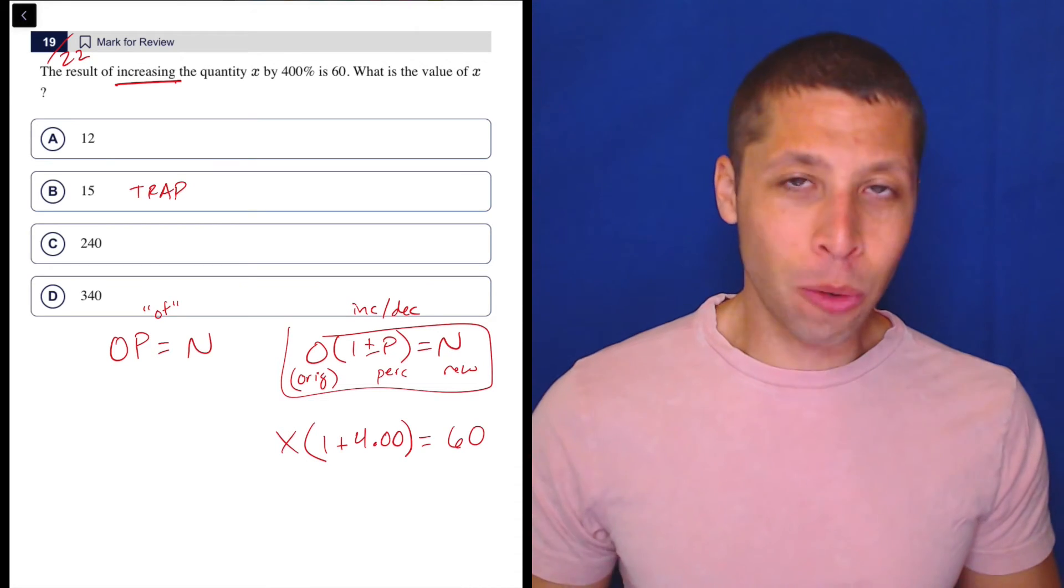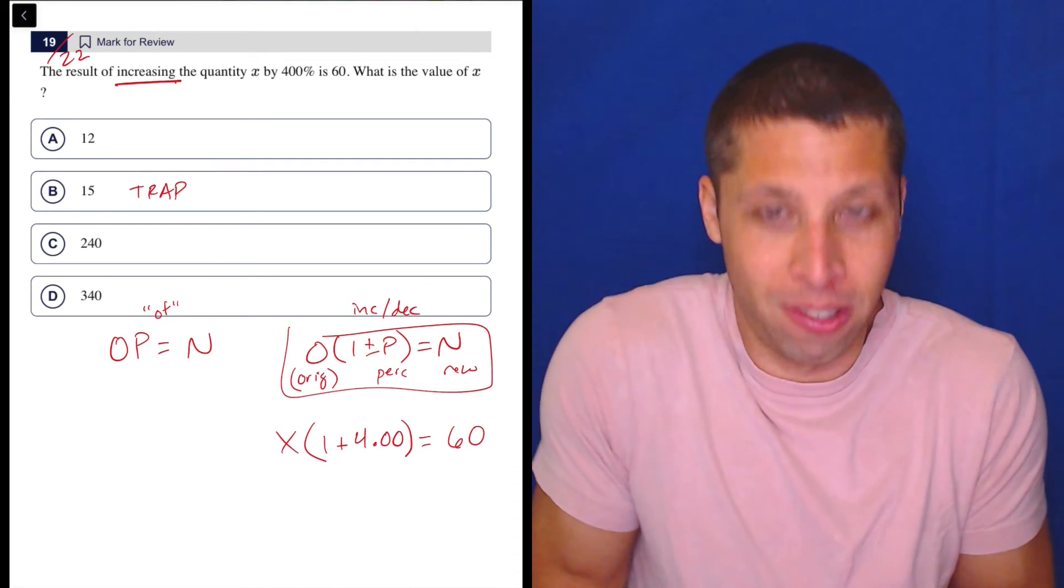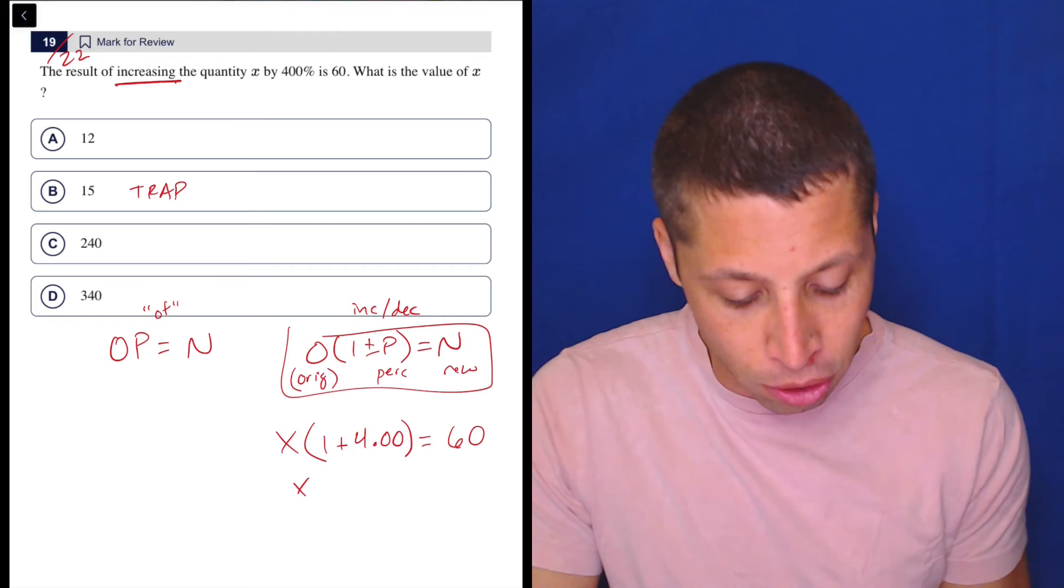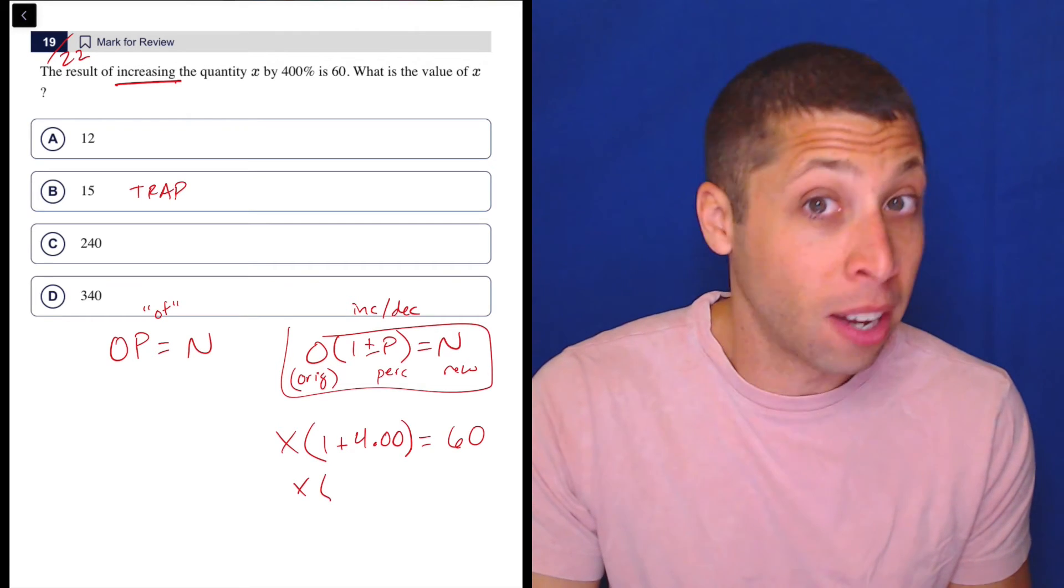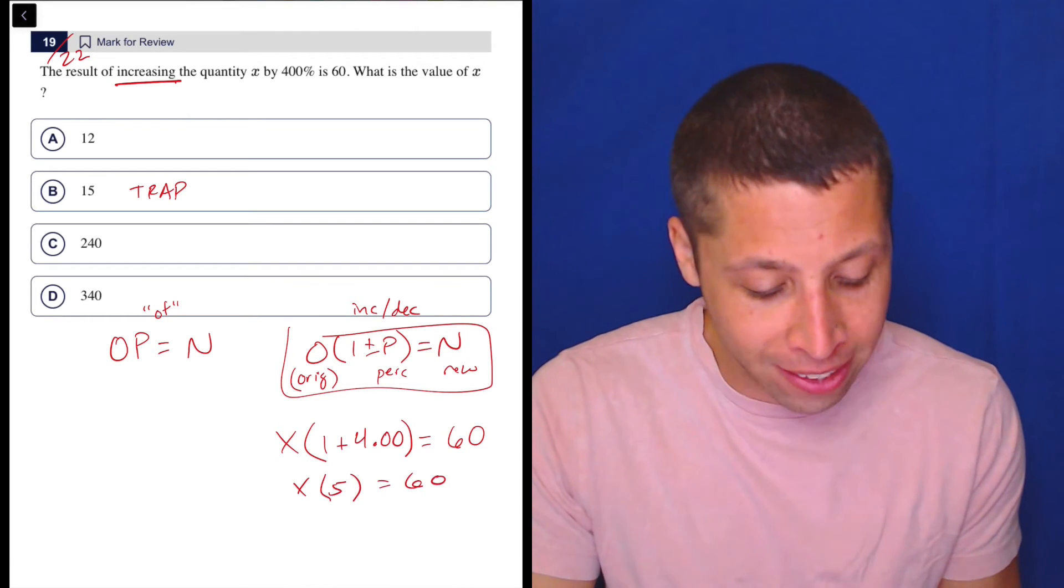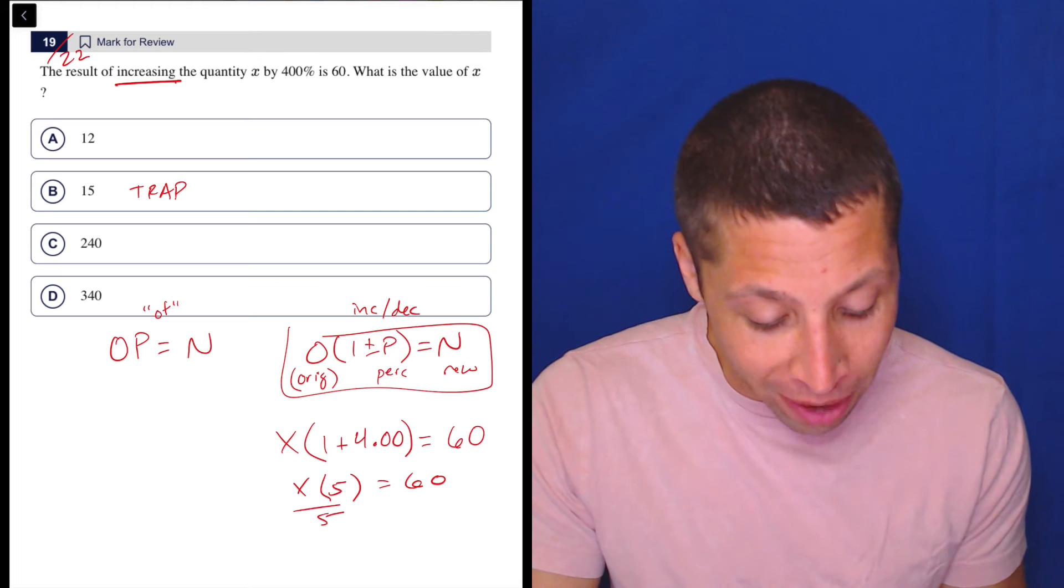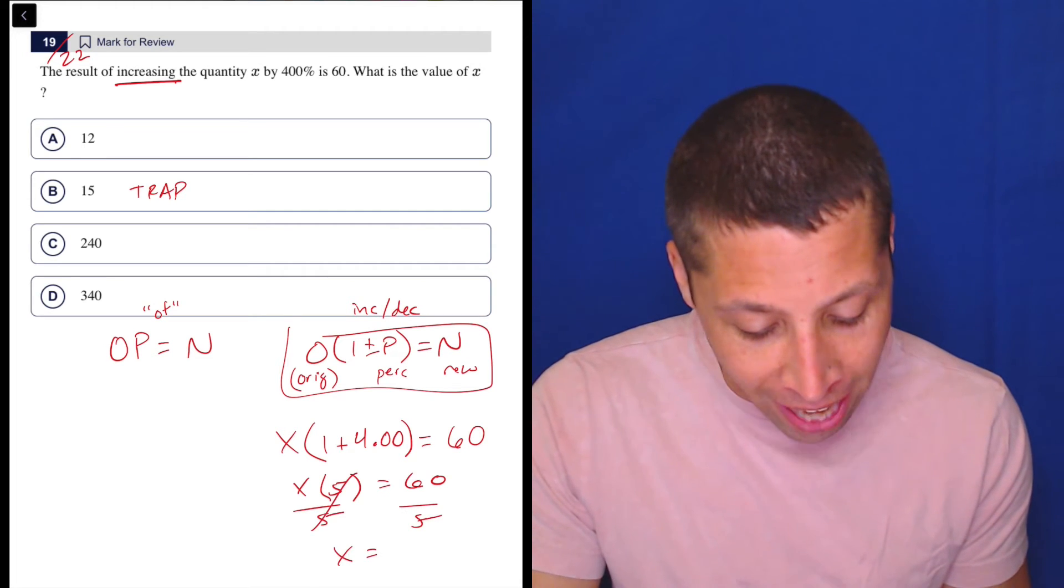So just like that, this question becomes basically just simple algebra. We can add the two together. One plus four is five, and then it's equal to 60. And then you divide by five, and that's that. X is 12.